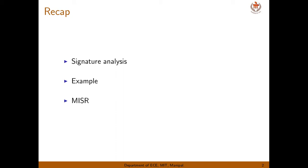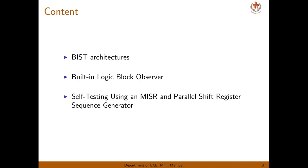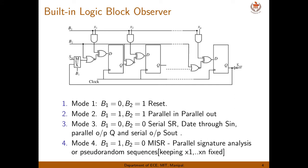The last topic we discussed was the multiple input shift register (MISR). It is similar to an LFSR, but where an LFSR has only one input, a multiple input shift register has n number of inputs. Today we are going to study two specific examples of BIST architecture. The first one is the built-in logic block observer, also called BILBO, and the second is self-testing using an MISR and parallel shift register sequence generator.